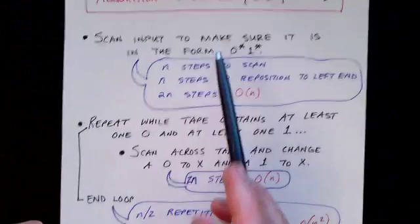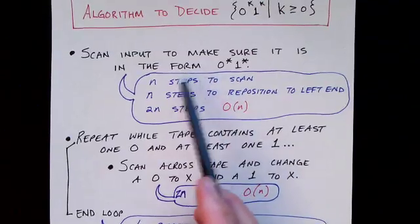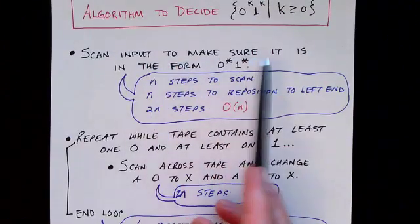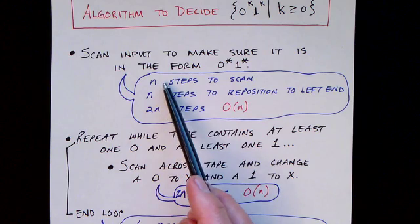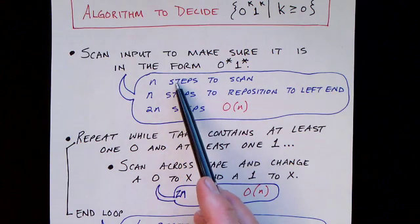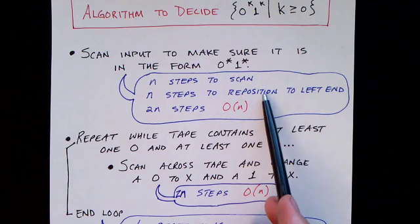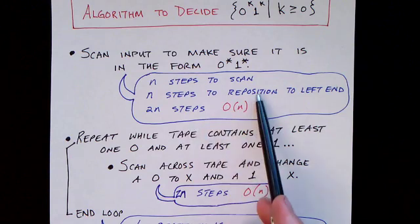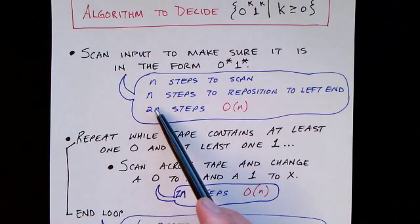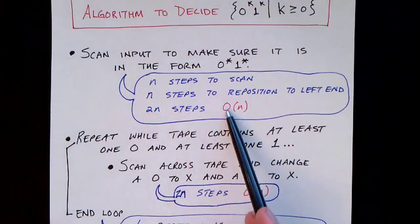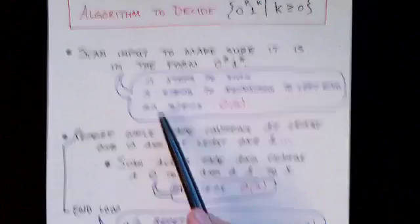Now let's look at the running time of this algorithm. Remember, we're counting transitions in the Turing machine. The first step is to scan the input to make sure it's in the proper form. The input size is N, so it takes N steps to scan from the left end to the first blank, and then we need to reposition to the left end again in preparation for the loop — another N steps. So this step takes 2N steps, which we summarize as order N. We don't care about the coefficient; we only care about the primary part of the term.